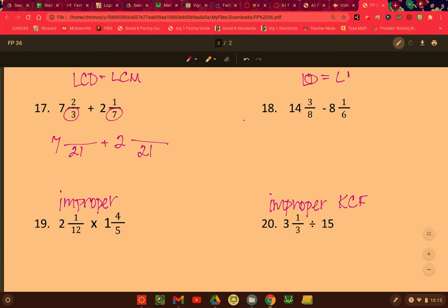So the least common denominator is the same thing as the least common multiple between these two numbers. So we need to have that for both of these. So 3 times 7 is 21, 2 times 7 is 14, 7 times 3 is 21, 1 times 3 is 3. So I want you to finish that one.